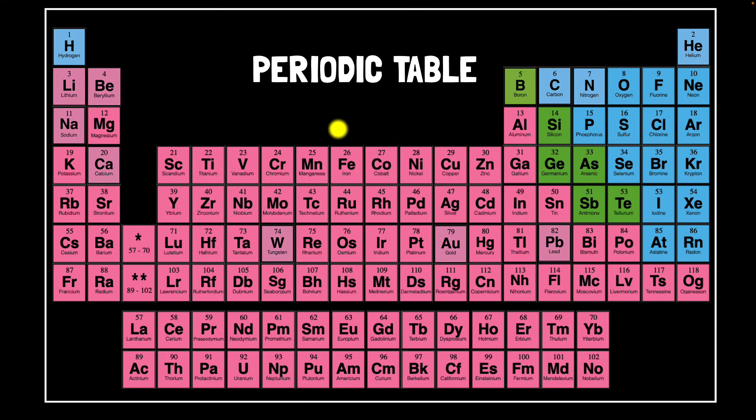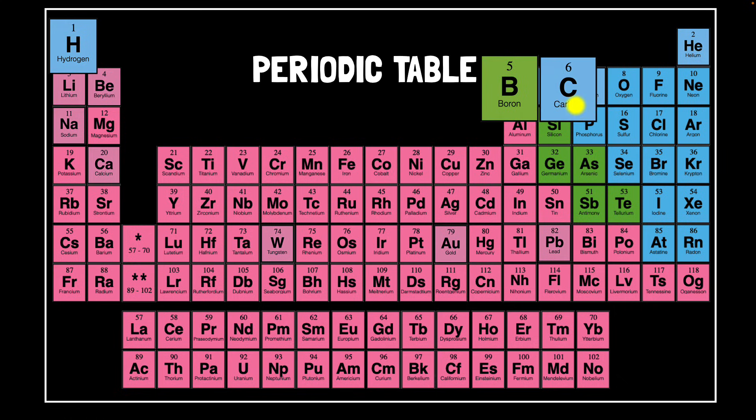What we want to notice over here is that each element has a symbol, kind of an abbreviation. Now for some elements, that's basically the first letter of the word. H for hydrogen, B for boron, C for carbon, N for nitrogen, and so on and so forth. And notice we always use capital letters.